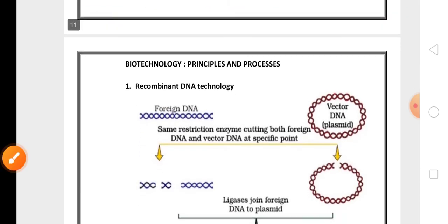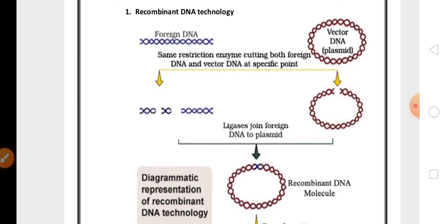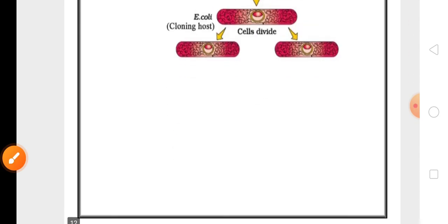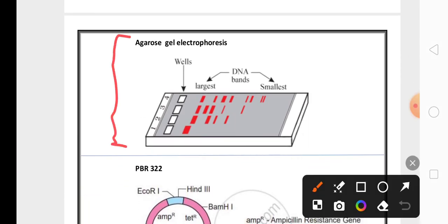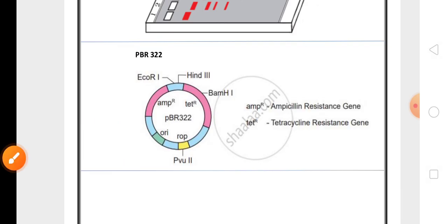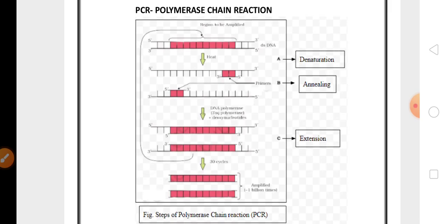Along with that, from the chapter biotechnology principles and processes, the diagrammatic representation of recombinant DNA technology is highly important. This chapter also has many other diagrams important for three marks. Agarose gel electrophoresis, then plasmid pBR322 diagram are very very important.